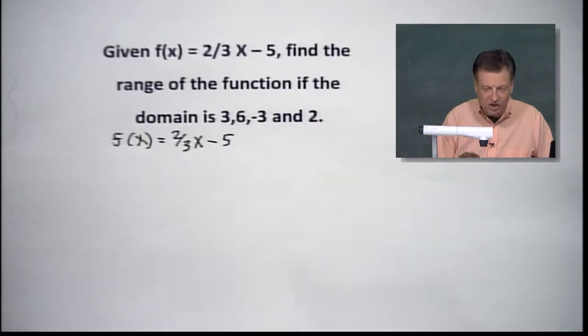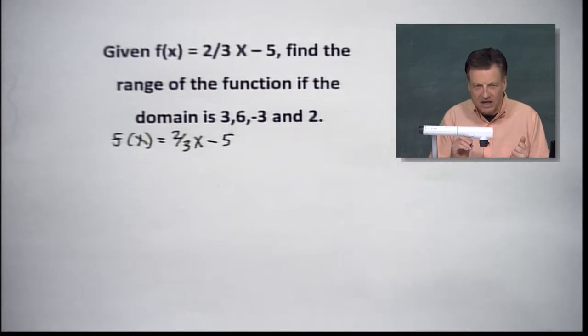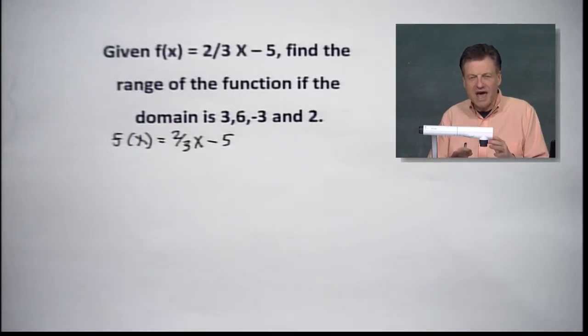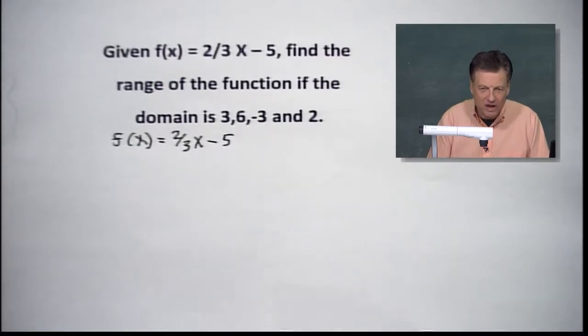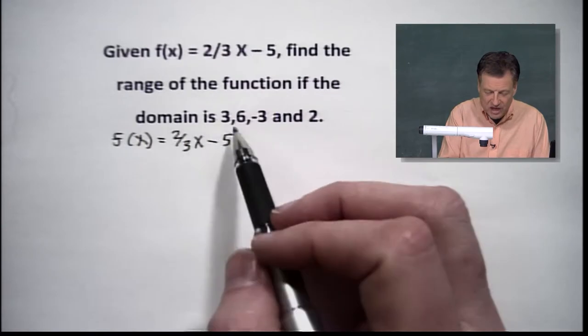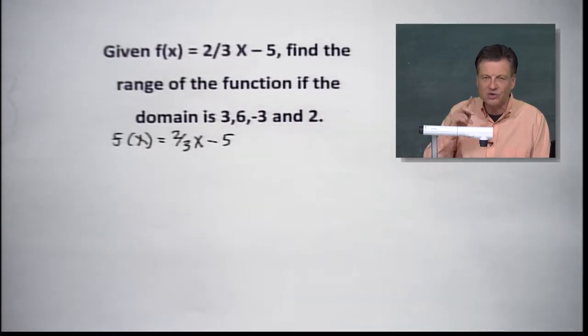Let's take a look at how this function works. We transition from the y equals two-thirds x minus 5 into eighth grade math, also algebra 1, algebra 2. Our calculator and all those technology things are still using y equals. Understand, they're interchangeable. Whatever we get will be our range. So that's what we're trying to do.